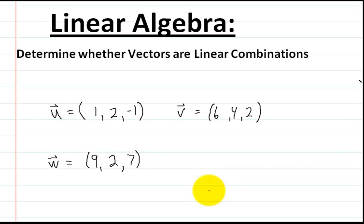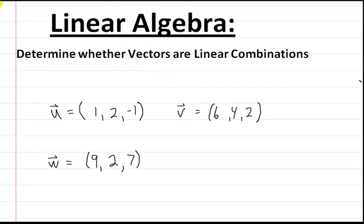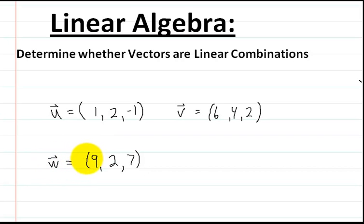Hey everybody, this video is on linear algebra and it is on determining whether vectors are linear combinations. So here we have two vectors, u and v. And what we want to know is whether this vector down here, w, is a linear combination of u and v.